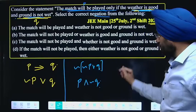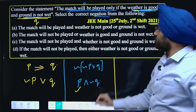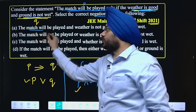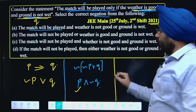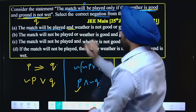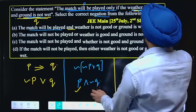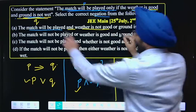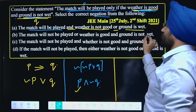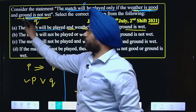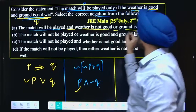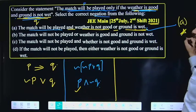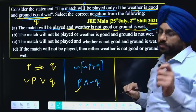Applying negation to Q — 'weather is good AND ground is not wet' — by De Morgan's law, it becomes 'weather is not good OR ground is wet'. Since the given condition said ground is not wet, its negation is ground is wet. So the final negation is: 'the match will be played AND weather is not good OR ground is wet.' This matches option A. Final answer is option A. Clear students. Thank you.